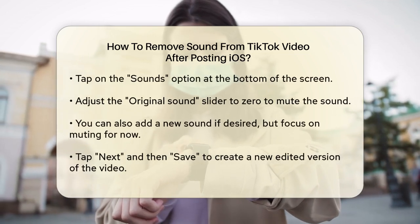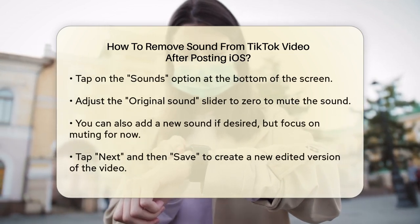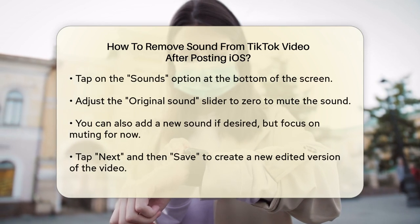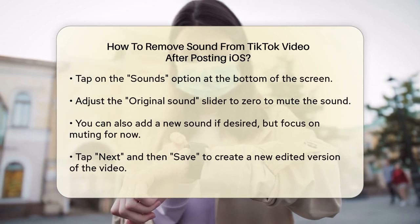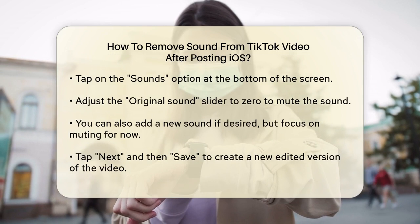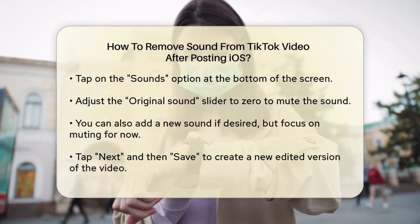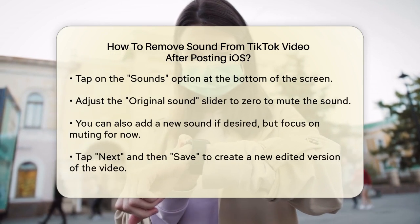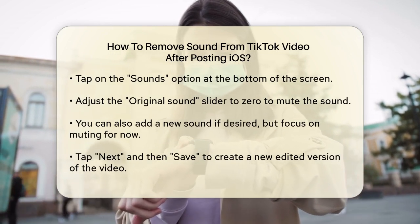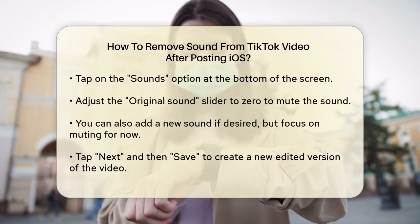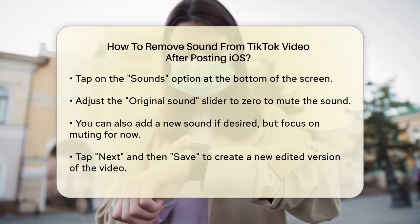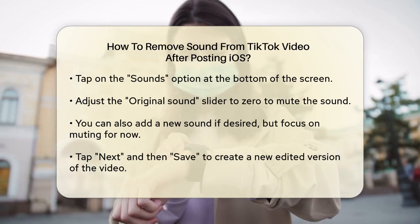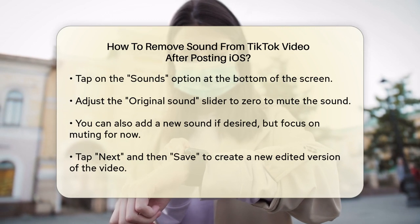You'll see the original sound and any added sounds. To mute the original sound, tap on the Volume option and adjust the original sound slider to zero. If you want to add a new sound, you can do that too, but for now just focus on muting the original sound. After adjusting the sliders, tap Next and then Save to save the changes to your video.